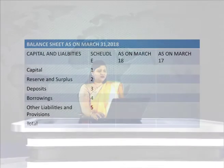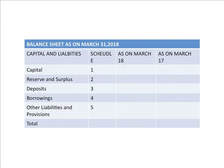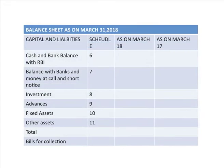Let us have an overview and revision of the schedule of balance sheet. Schedule 1 is for capital, schedule 2 is reserves and surplus, schedule 3 is deposits, schedule 4 is borrowings, and schedule 5 is other liabilities and provisions. Schedules 1 to 5 make up the total capital and liabilities side of the balance sheet. On the asset side: schedule 6 is cash and balance with RBI, schedule 7 is balance with bank and money at call and short notice.